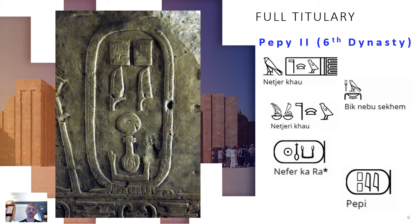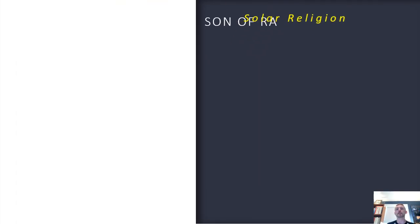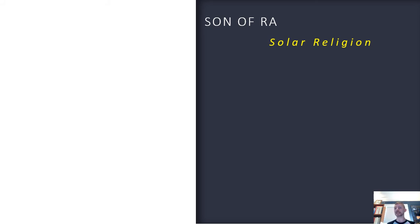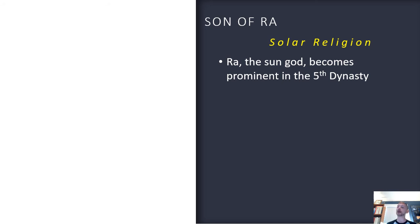You may have noticed in Pepi's name a mention of another deity — Re: 'beautiful is the ka of Re.' In the Old Kingdom, the worship of the sun god Re becomes prominent especially by the fifth dynasty, and you start to see the name of Re appearing frequently in the royal titulary.